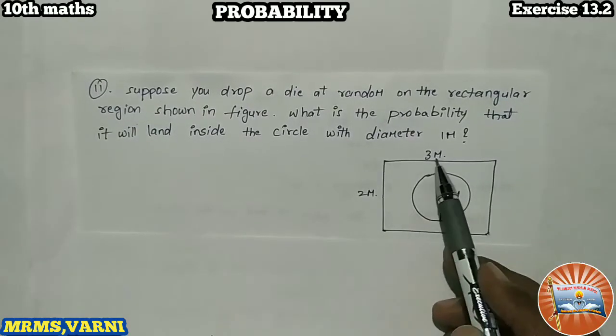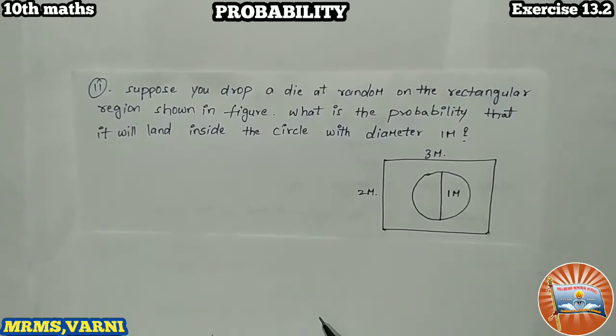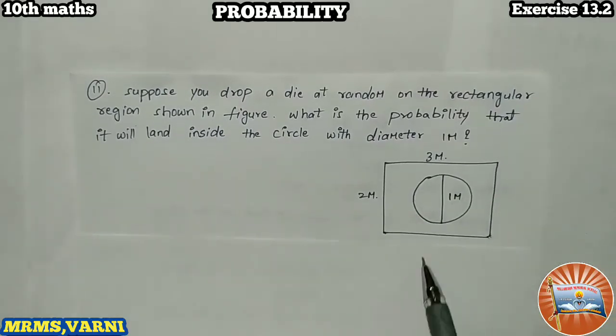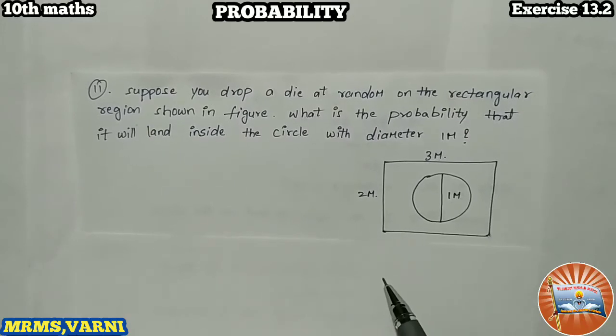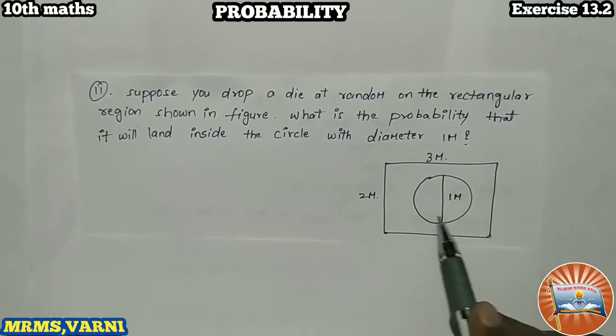Length of rectangle is 3 meters and breadth is 2 meters. If you drop a die, we have to find the probability of the die dropping into the circle region.